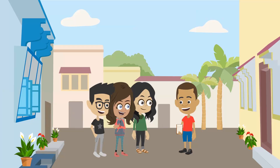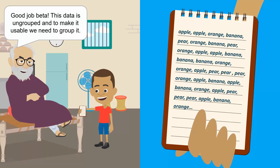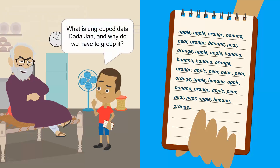After asking all the students, Asif presents the gathered information to Dadajaan. Dadajaan, we asked all the students for their choice of fruit, and here are the results of our survey. Good job, Asif. This data is ungrouped, and to make it usable we need to group it. What is ungrouped data, Dadajaan, and why do we have to group it?